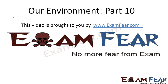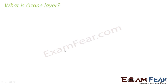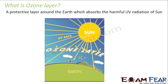Hello friends, this video on our environment part 10 is brought to you by examfear.com — no more fear from exam. So let us try to understand what is the ozone layer, because before we try to understand how it harms the environment, we should first know what it is. The ozone layer is a protective layer around the earth which absorbs the harmful ultraviolet radiation of the sun.